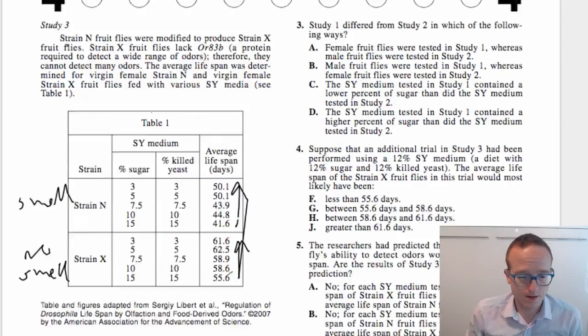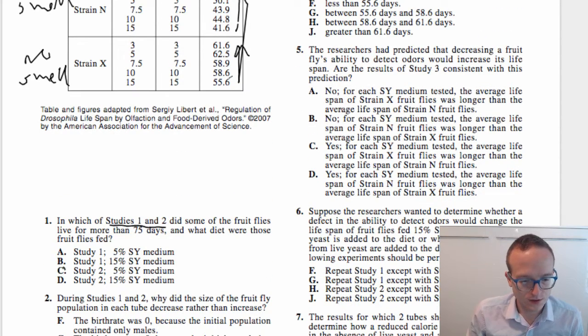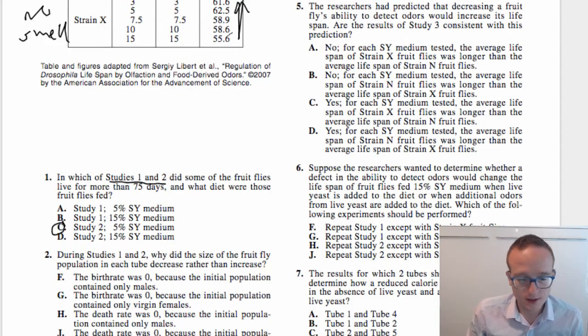The only graph that does that is this 5%, and that corresponds to study 2, right? So we scroll back down here, we want study 2, and that's the 5% medium.